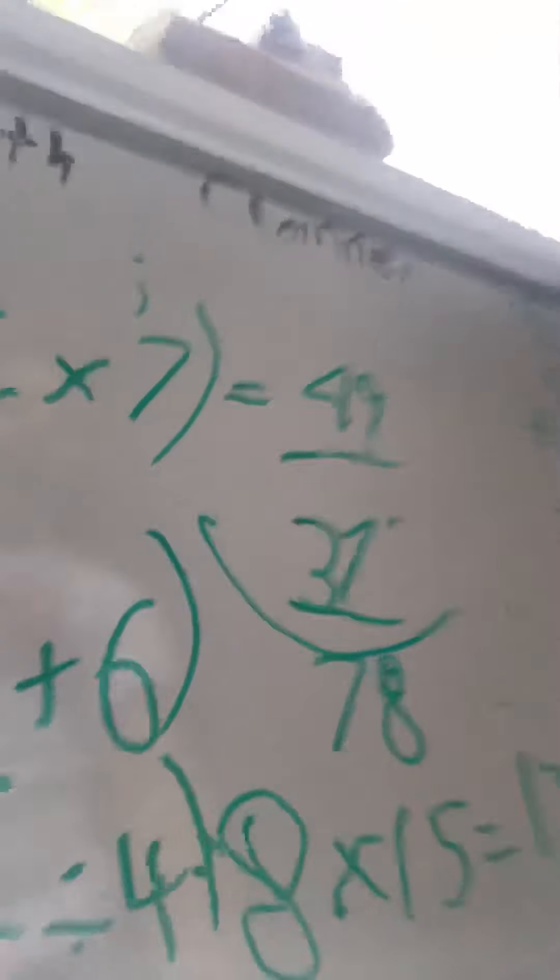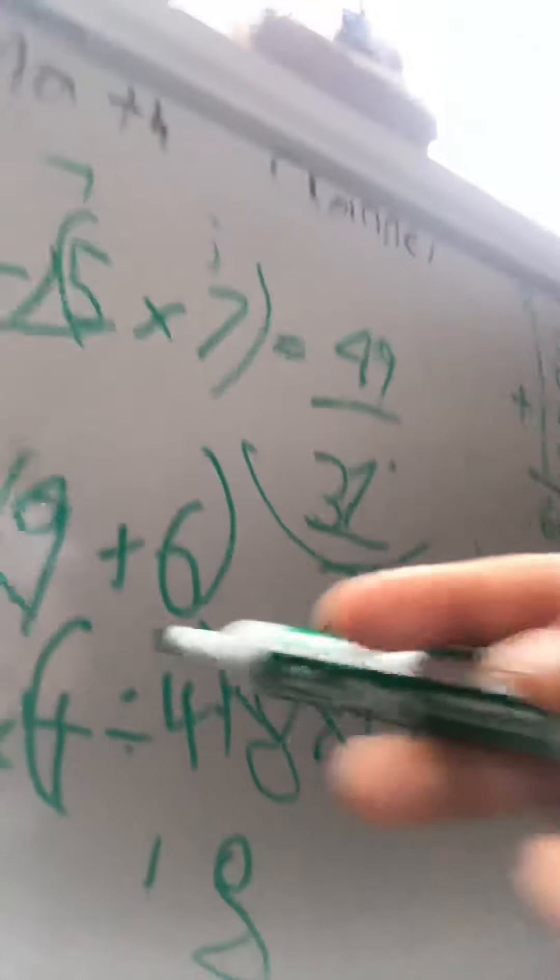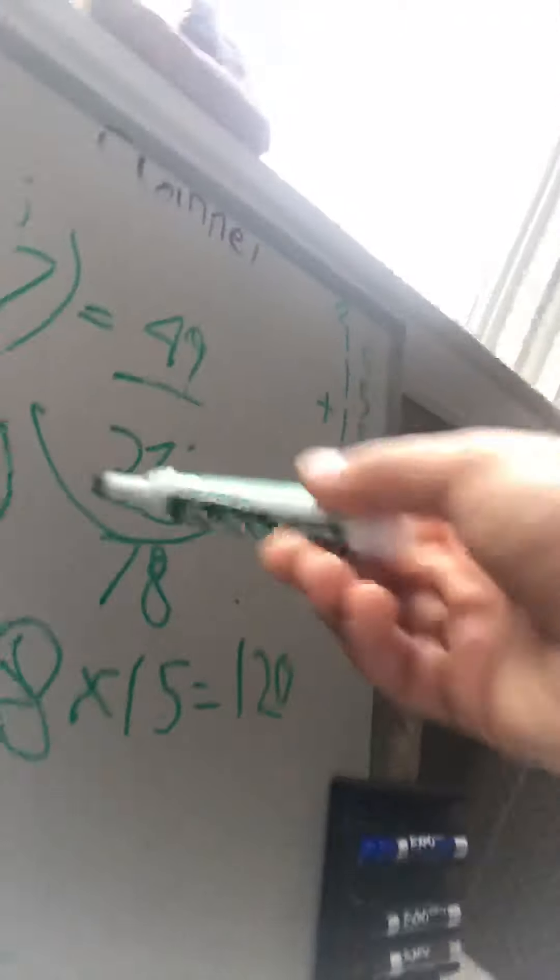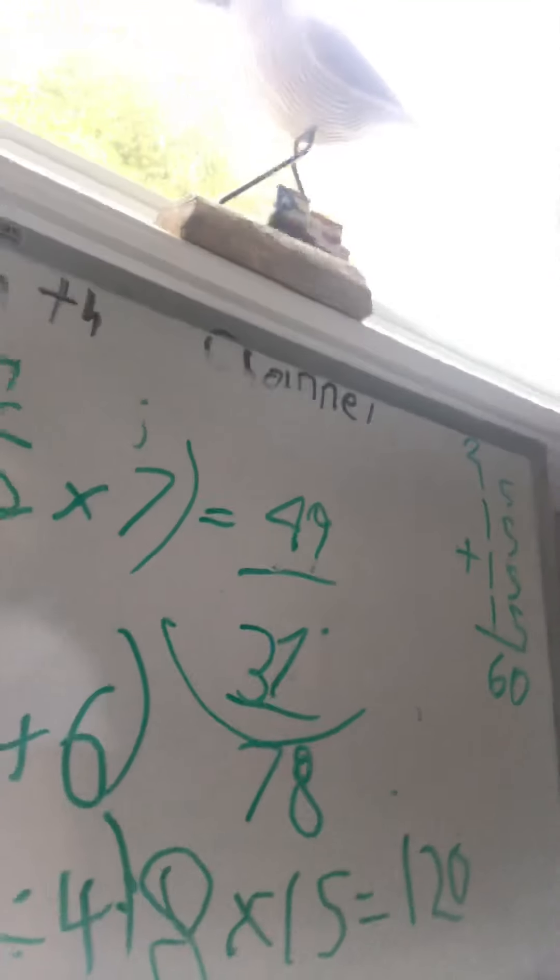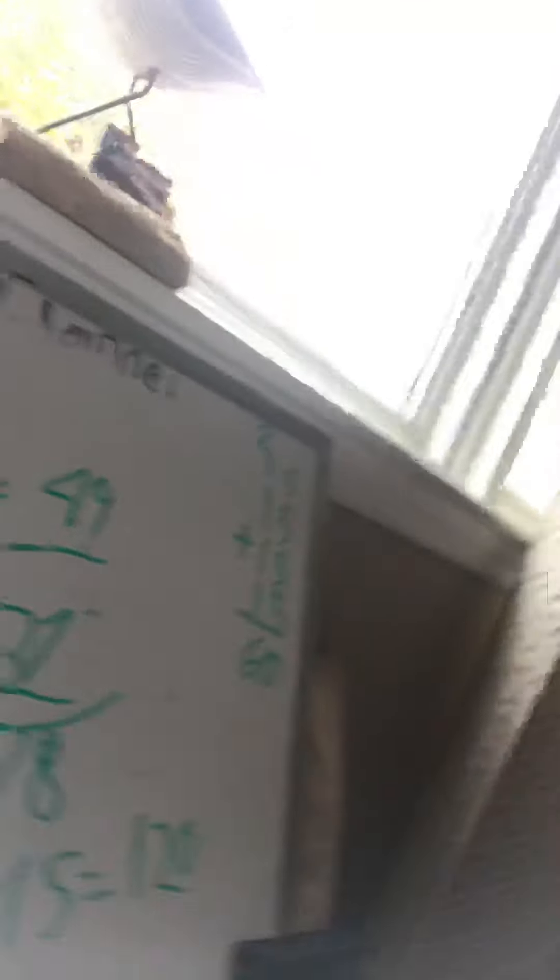Or we could do it this way. 8 times 4 divided by 4. 32 is 8 times 4. And then divided by 4 is 8. Also 8.